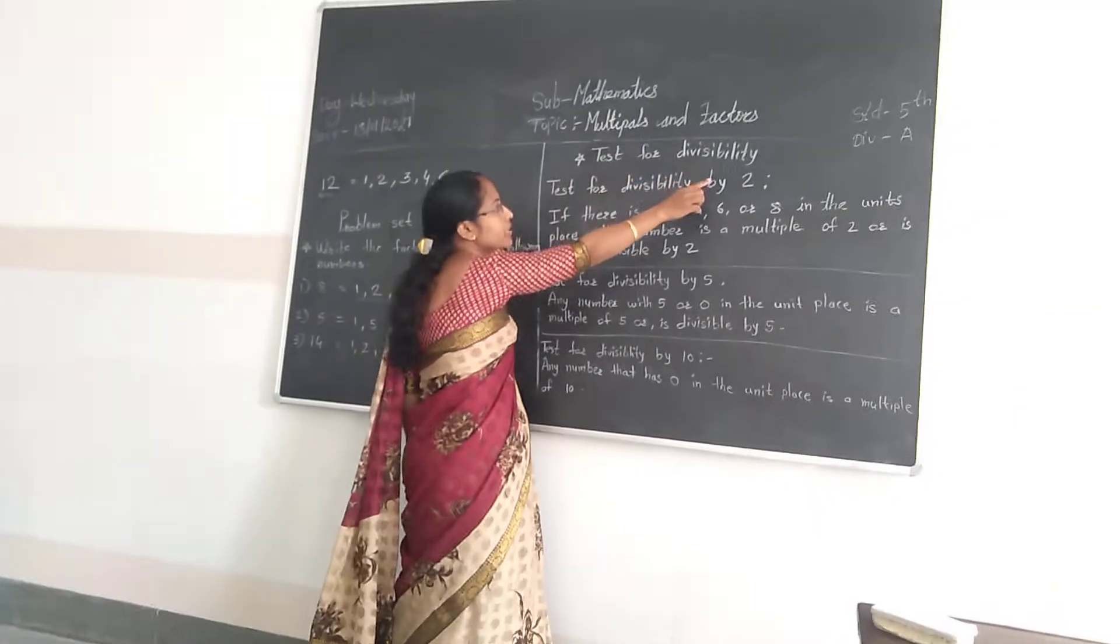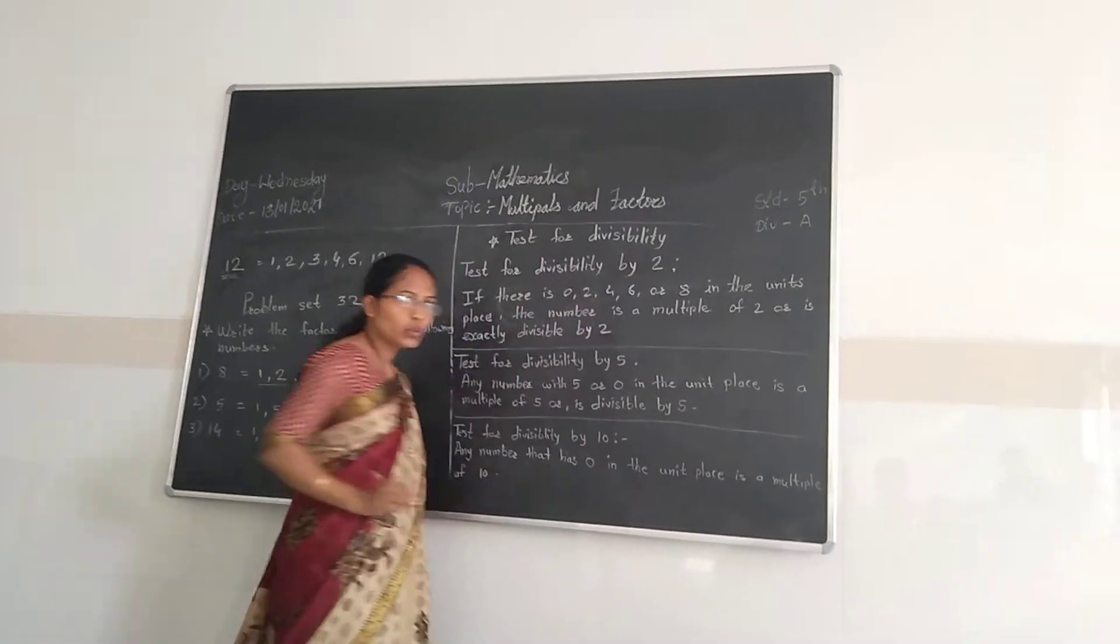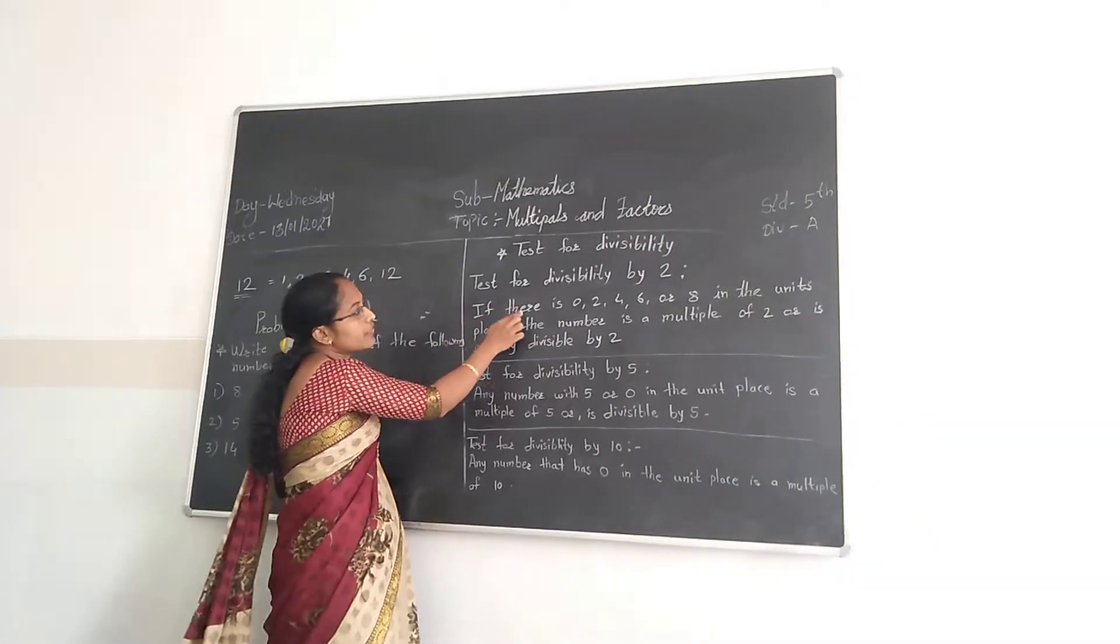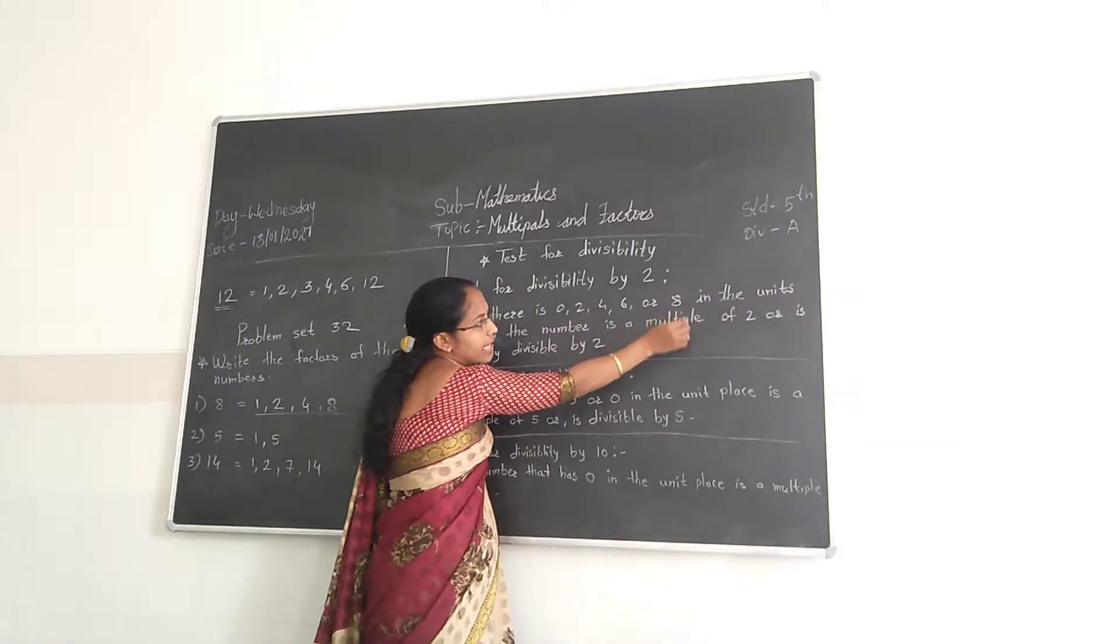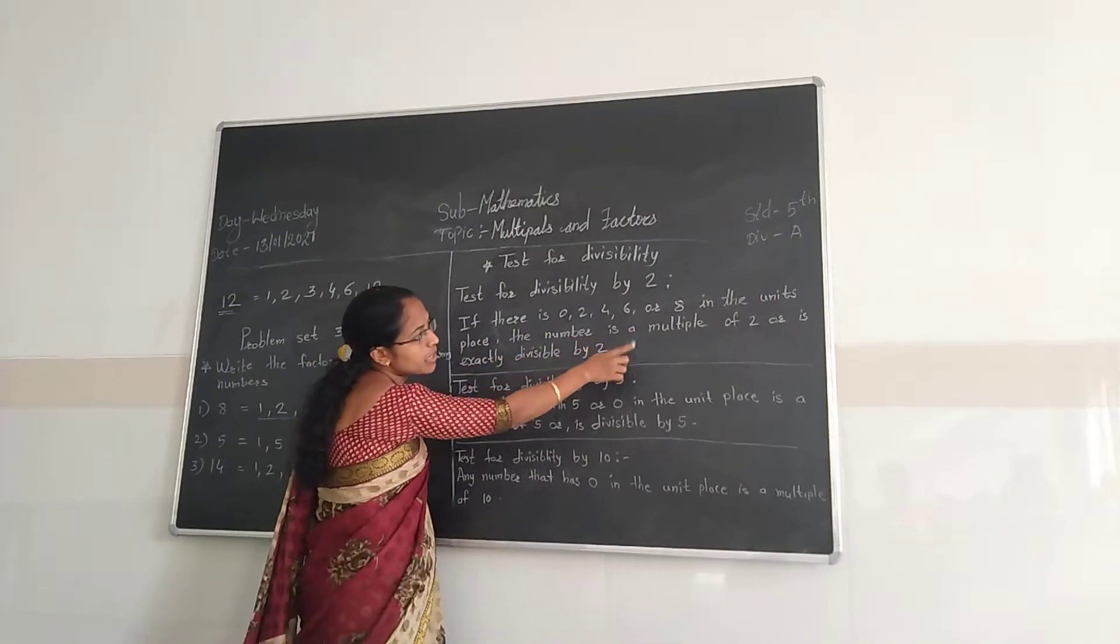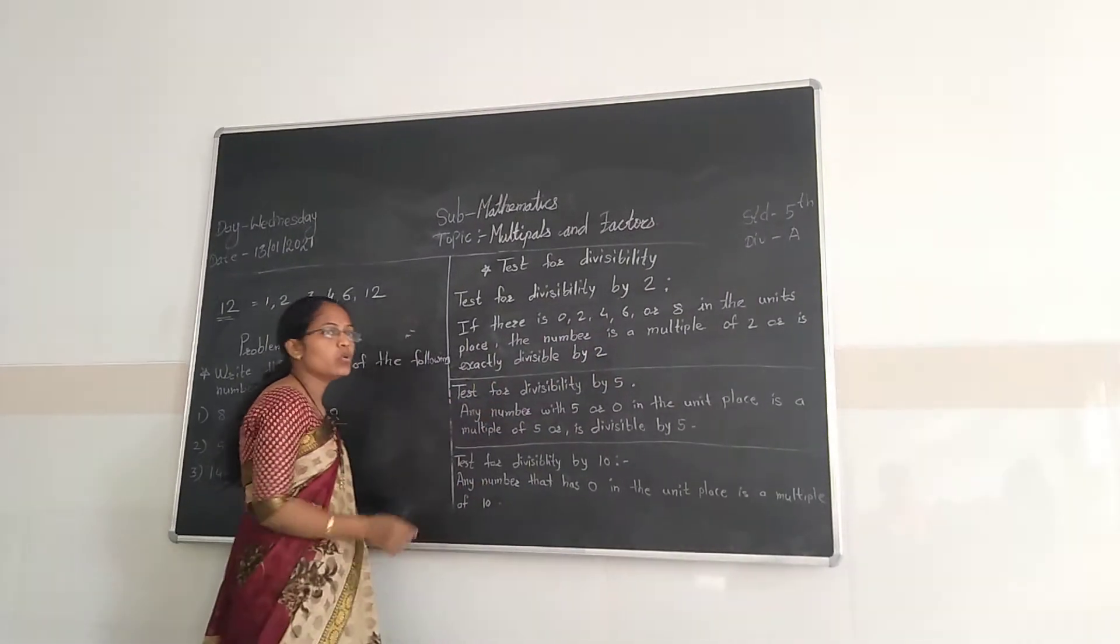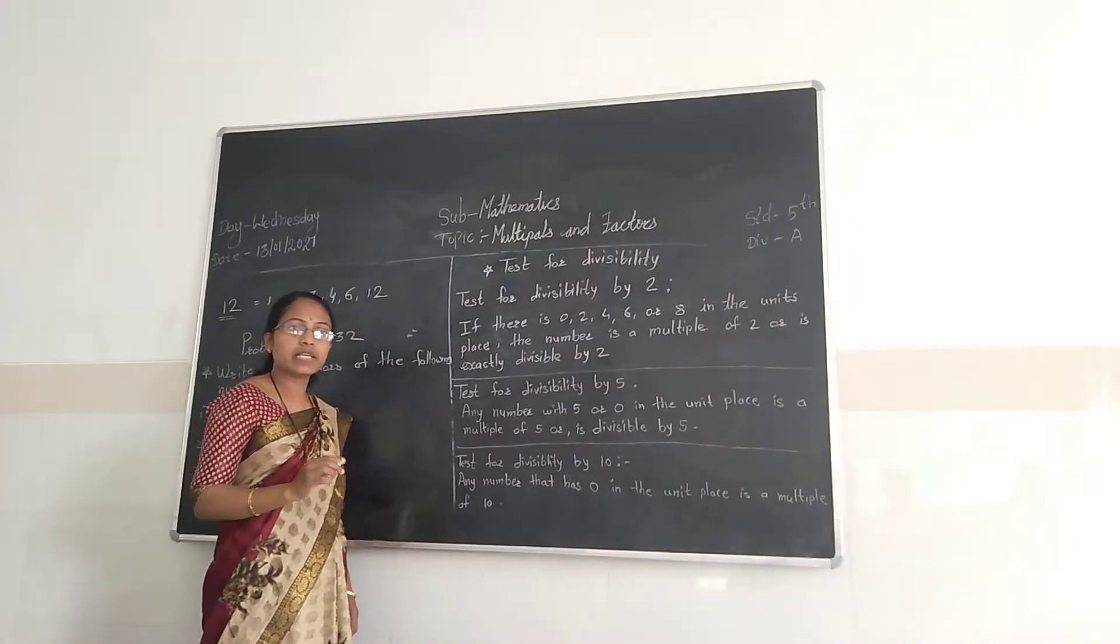Test for divisibility. Test for divisibility by 2. If there is 0, 2, 4, 6, or 8 in the unit place, the number is a multiple of 2 or is exactly divisible by 2.